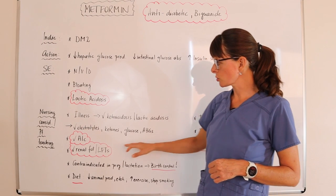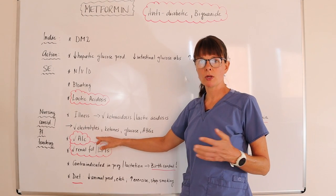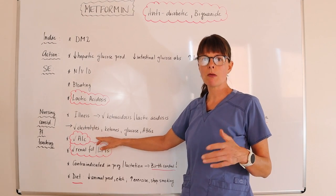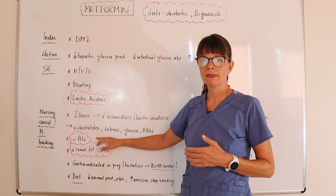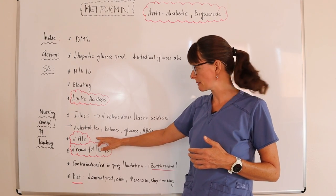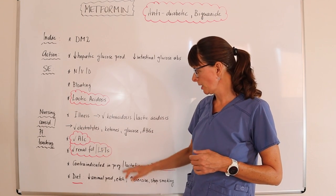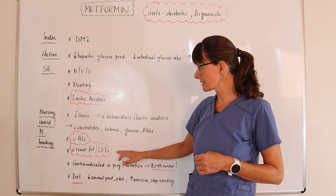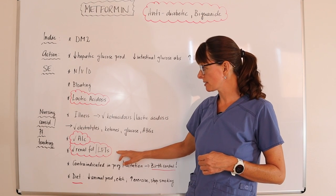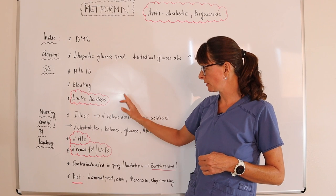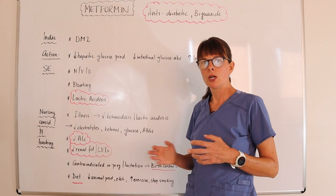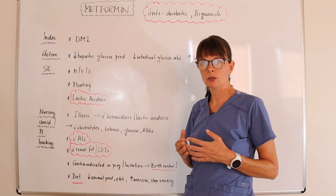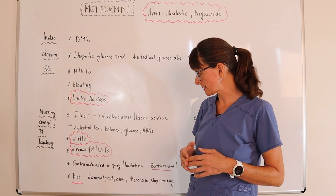We also want to check their hemoglobin A1C, which is probably something that has been checked already before they get put on this medication. We want to check renal as well as liver function because of the risk for acidosis and also knowing that the medication is going to affect those organs.